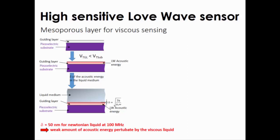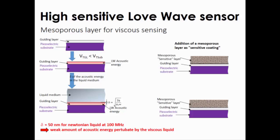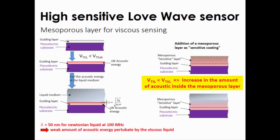Our goal is to try to improve the perturbation by the liquid with the acoustic energy. For this, we propose to use an additional layer sensitive as a mesoporous layer. In the condition that the bulk velocity of the mesoporous layer is lower than in the guiding layer, a part of the acoustic energy could be trapped inside the mesoporous layer, as you can see here. By depositing the liquid here, you will have the liquid inside the porous layer, and by doing that, an increase of the perturbation of the acoustic energy and disturbed by the liquid.